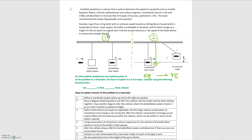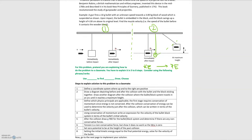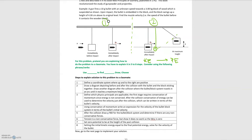The first part of what we're asked to do is define our problem-solving steps so that a classmate could solve this problem — make sure they're detailed. The first step is to define a coordinate system where up and to the right are positive. Remember, momentum is a vector and we're solving for velocity, which is also a vector. So we choose up as positive y and right as positive x.